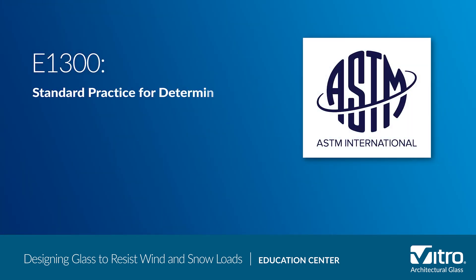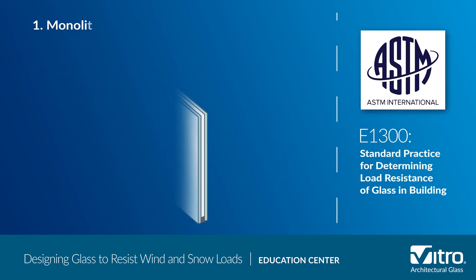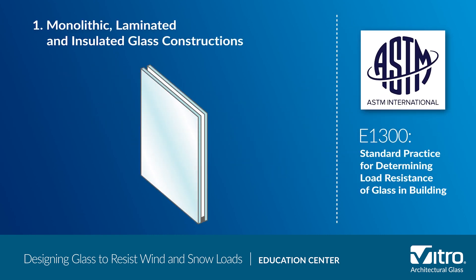We'll briefly describe four relevant procedures addressed by the ASTM E-1300 standard. First, ASTM E-1300 includes procedures that address monolithic, laminated, and insulated glass construction made with annealed or heat treated glass. IGUs can have various glass makeups, and each configuration can include different combinations of monolithic glass lights and laminated glass lights.